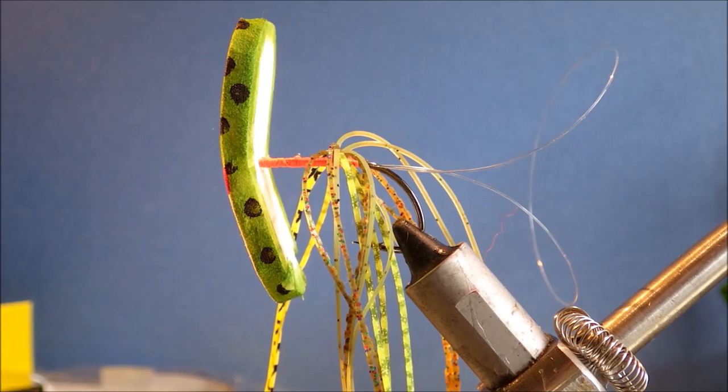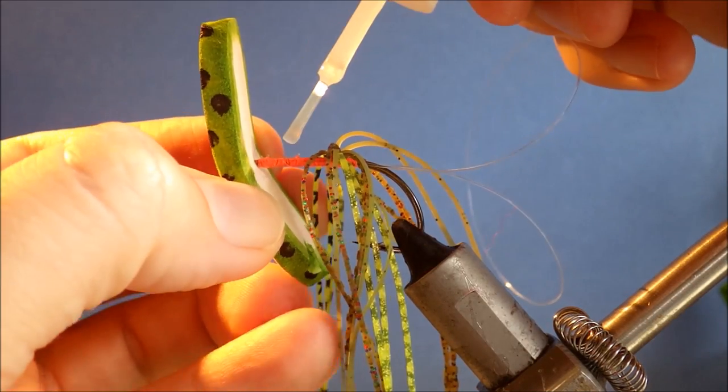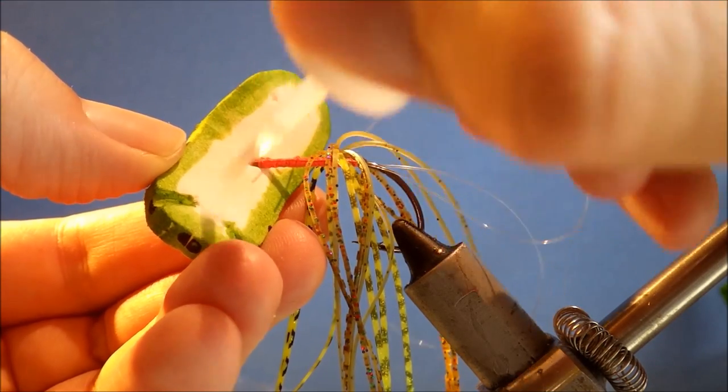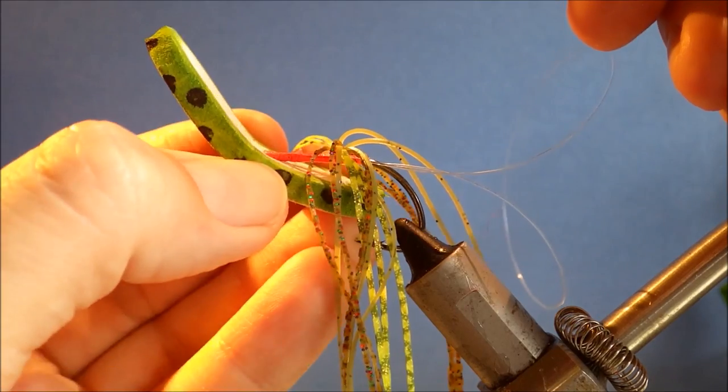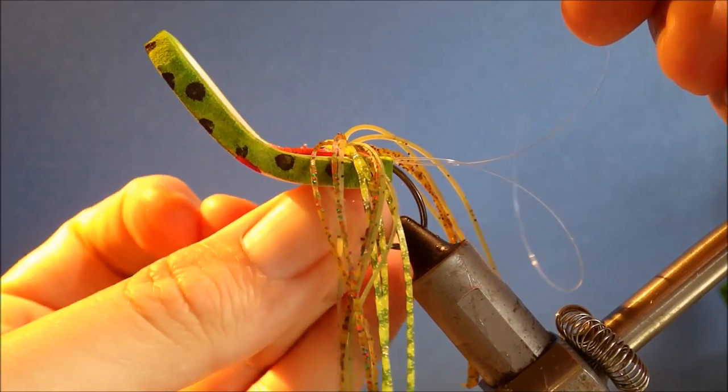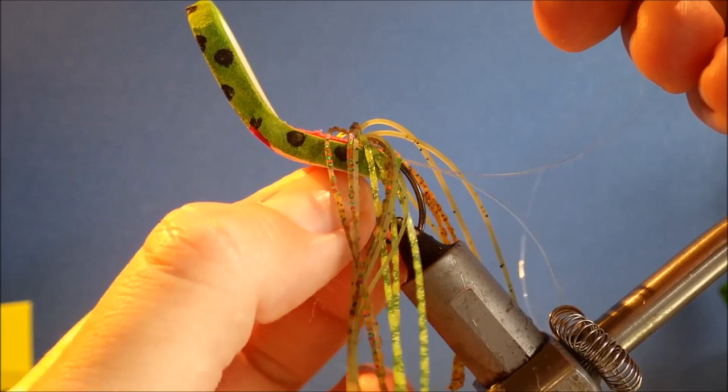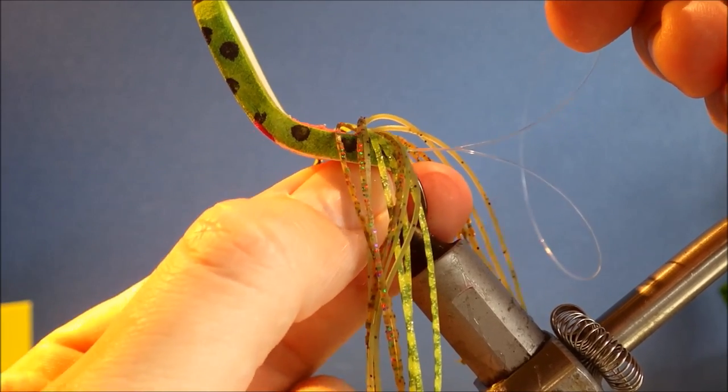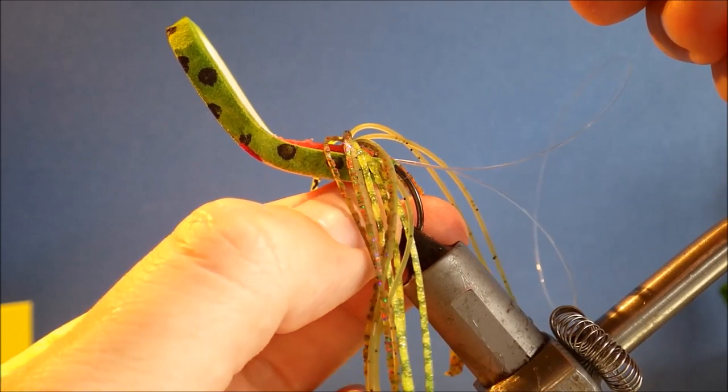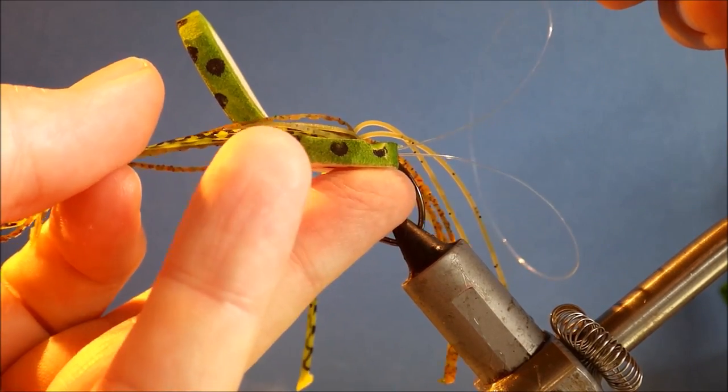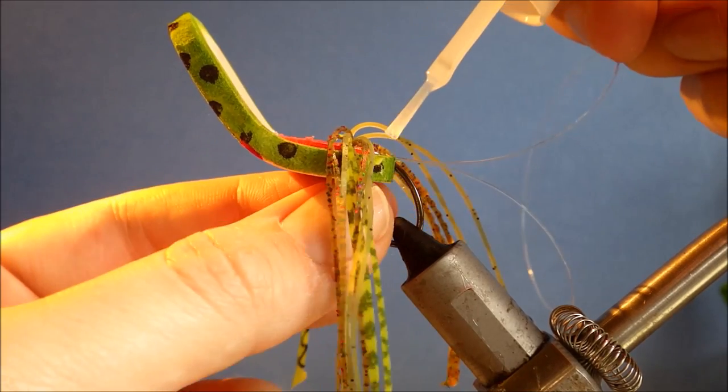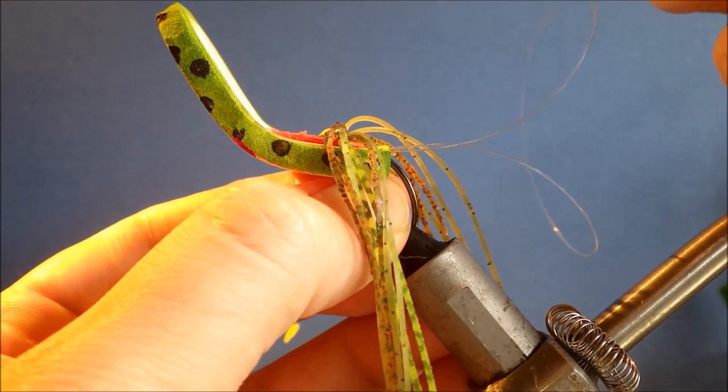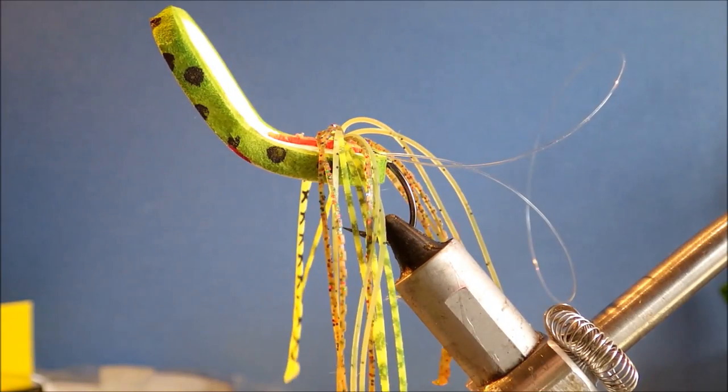So first thing is just put a stripe of glue along the middle of the bottom, and then press that up into the hook. And make sure the curve of the shank is going into that slit that you've cut. You might even want to put some glue there just to help hold it. Just hold it for a couple of seconds just to make sure it gets a good grip.